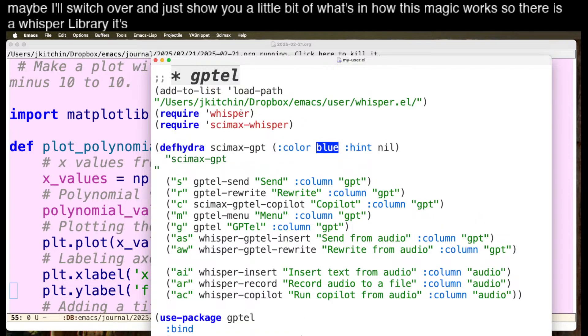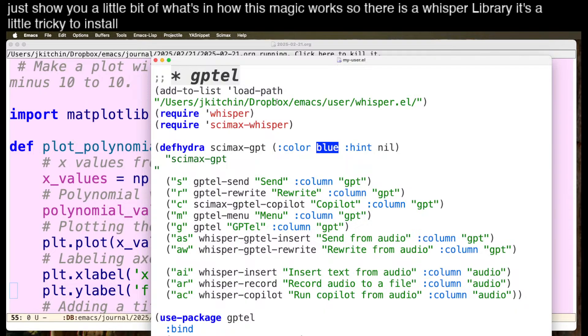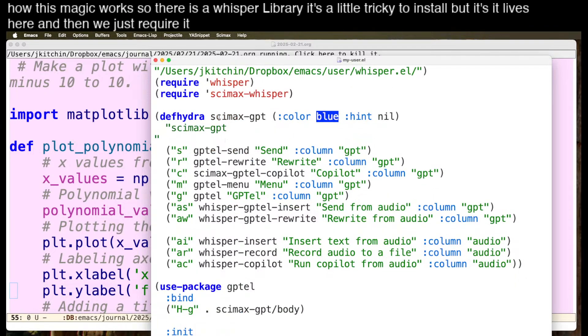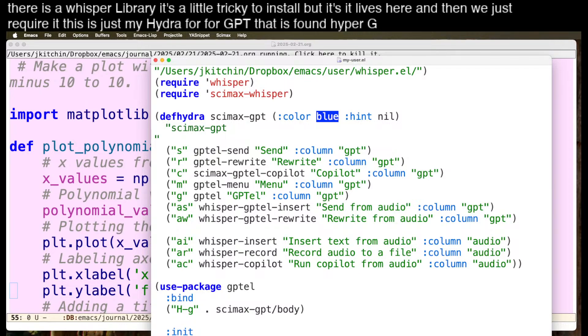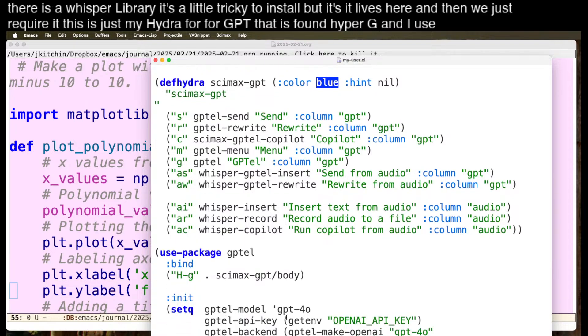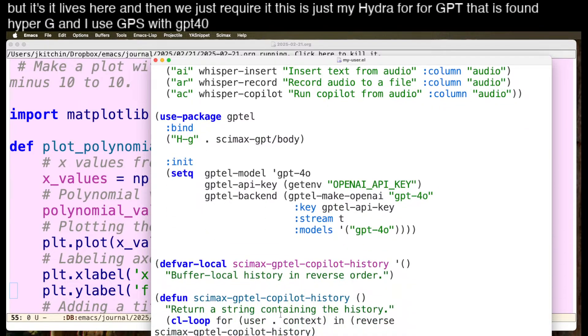So there is a whisper library. It's a little tricky to install, but it lives here, and then we just require it. This is just my Hydra for GPT that is bound to Hyper-G, and I use GPTEL with GPT-4-0, and so that's the setup there.